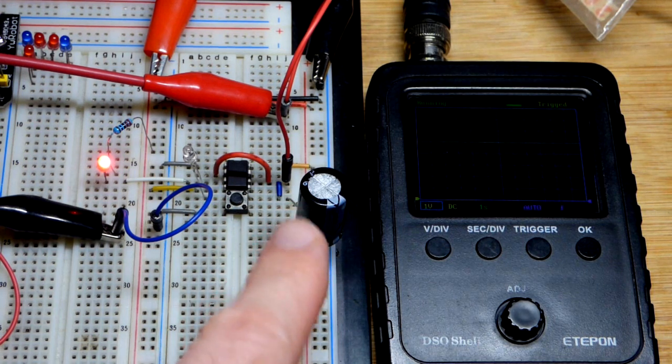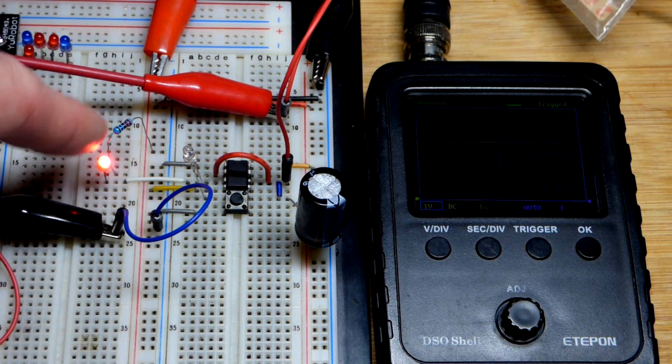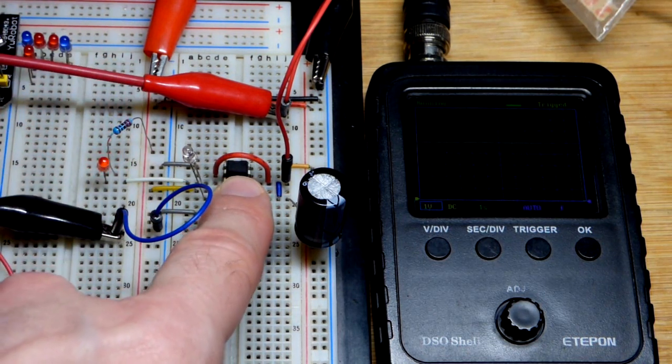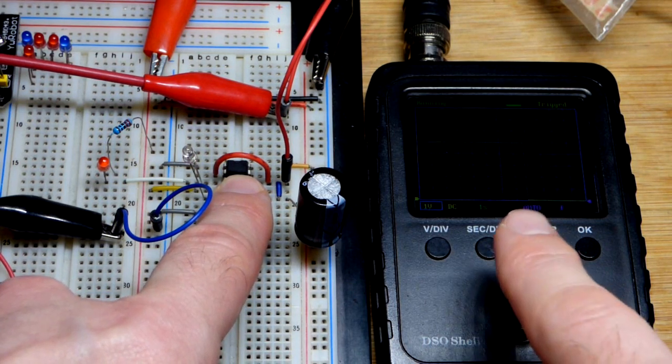Right now the capacitor is charged to 5 volts, we have 5 volts at the power supply. The output is low, so the red LED right there is on. When I press the reset switch right here you can see...